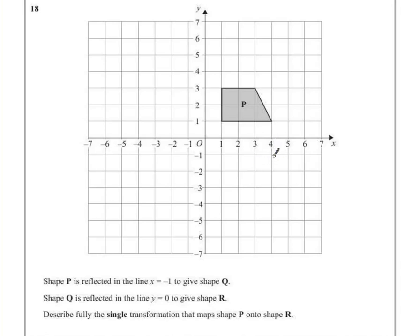Question 18. Shape P is reflected in the line x equals negative 1 to give shape Q. Shape Q is reflected in the line y equals 0 to give shape R. Describe fully the single transformation that maps P onto shape R.